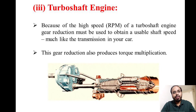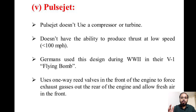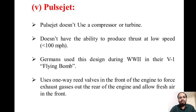The turboprop engine is essentially a turboshaft engine attached to a propeller, and a propeller is more efficient. The pulse jet engine does not use a compressor or turbine and does not have the ability to produce thrust at lower speeds — less than 100 miles per hour. The Germans used pulse jet designs during World War II in their V-1 flying bomb, using one-way reed valves in the front of the engine to force exhaust gases out and allow fresh air in the front.